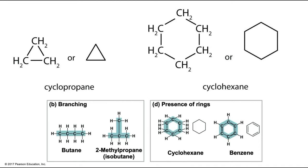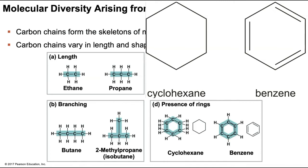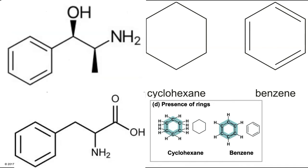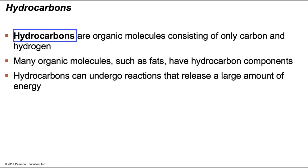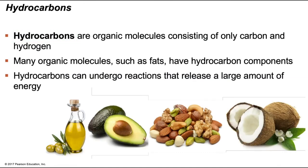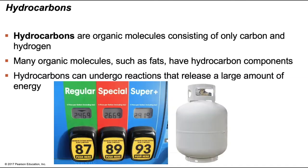All of the molecules discussed so far are solely made of carbon and hydrogen with no other element present — these molecules are referred to as hydrocarbons. Notice even the word hydrocarbon contains hydrogen and carbon. Hydrocarbons are found in organic molecules such as fats, as well as fuels like octane and propane. A major characteristic of hydrocarbons is their ability to undergo reactions that release a large amount of energy.